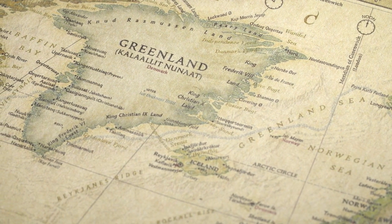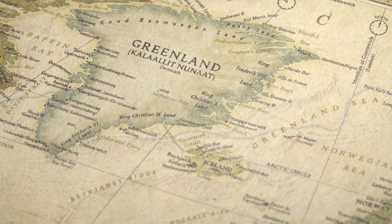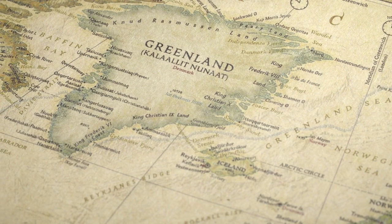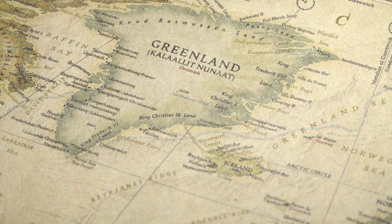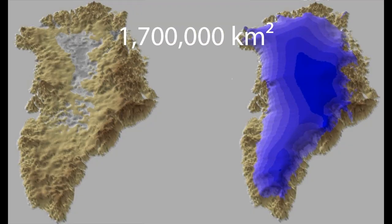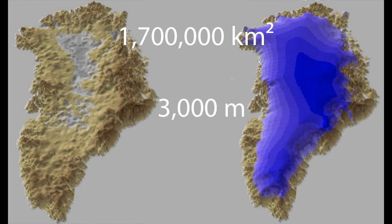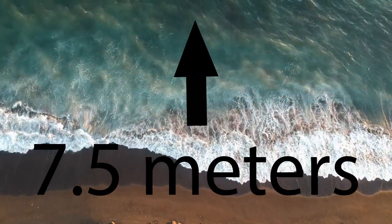The issue of sea level rise is one with worldwide implications, and the Greenland ice sheet is a big part of the issue. With 1.7 million square kilometers of ice that can reach up to 3,000 meters deep, the ice has the ability to add about 7.5 meters of water to a global average sea level. In other words, if all ice was added to oceans as water, global average sea level would rise by about 7.4 meters.